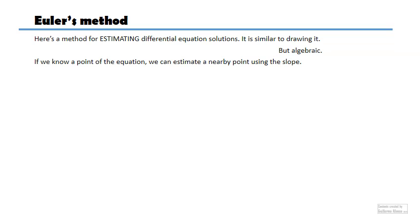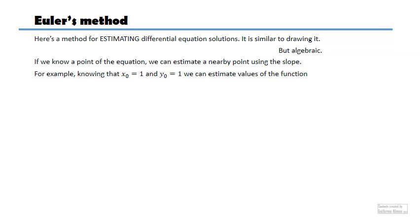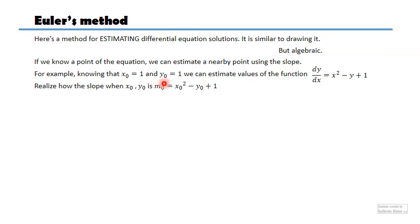If we know a point in the equation — if you know that this is a point so you have an idea of what a particular solution is — we can use this slope to estimate the value of a nearby point. For example, if they tell me that when x equals 1, y equals 1, maybe I can estimate further values — what is y going to be when x equals 2? I can calculate the slope at this point by putting the values of x and y into the differential equation, and I put that as m0. It gives me 1, so I know at this point the slope is 1.